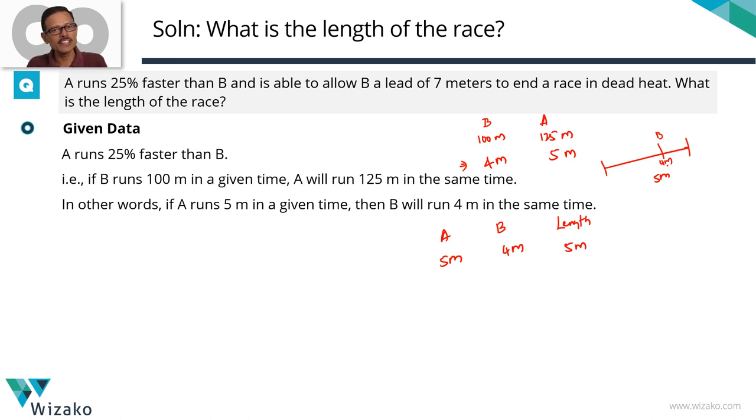If A and B will have to finish the race together, then essentially A has to swap this distance with B in terms of a lead. So if A were to start here and he allows B to start 1 meter ahead of him, then when they reach the 5 meter point, A would have run 5 meters, B would have run 4 meters. They would have finished the race together.